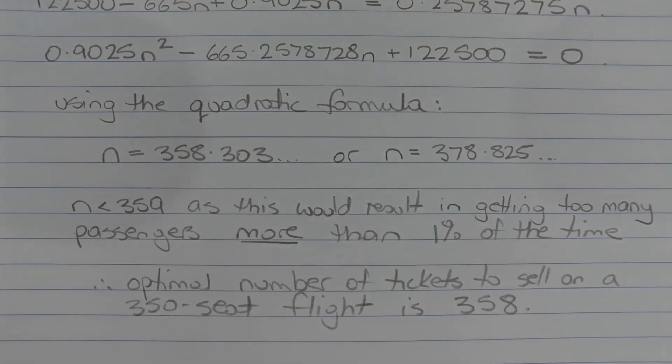Using the quadratic formula, N is equal to 358.303 or N is equal to 378.825.